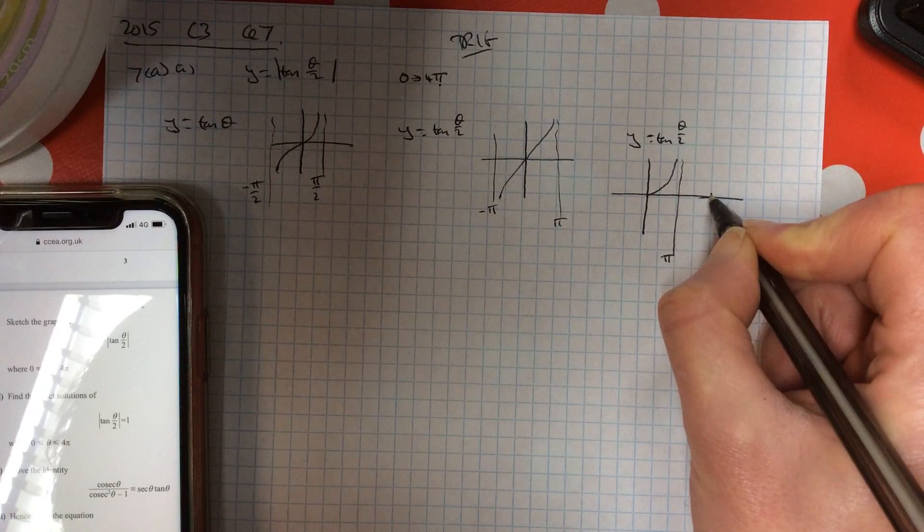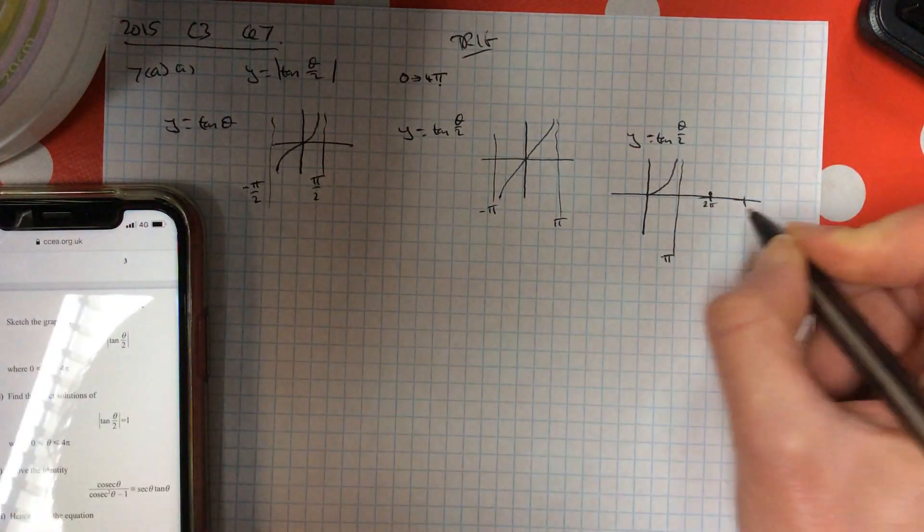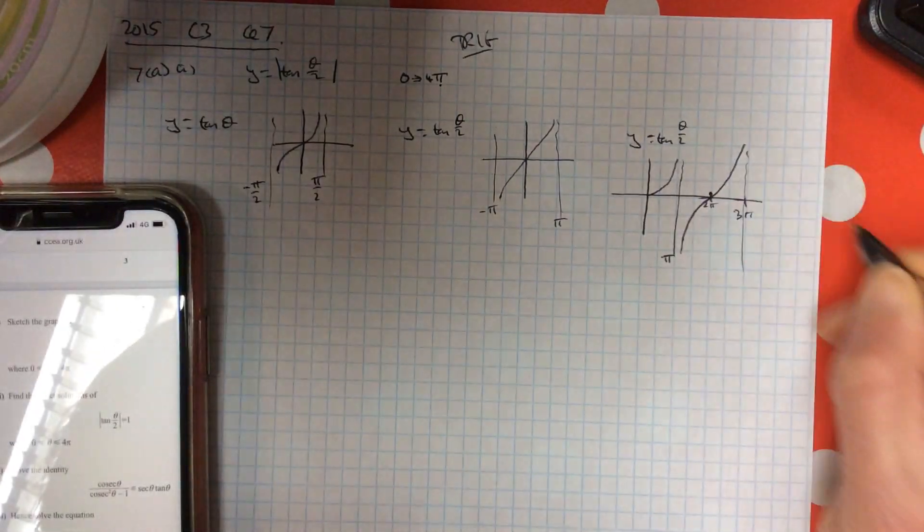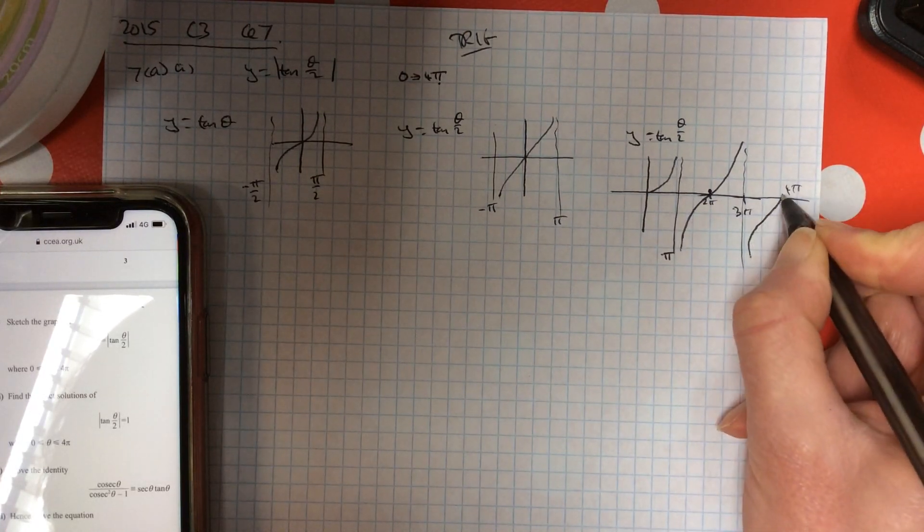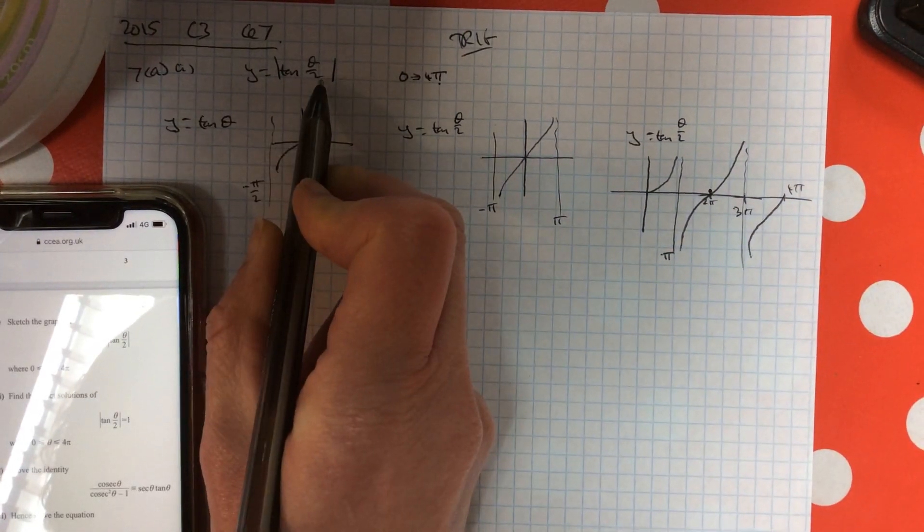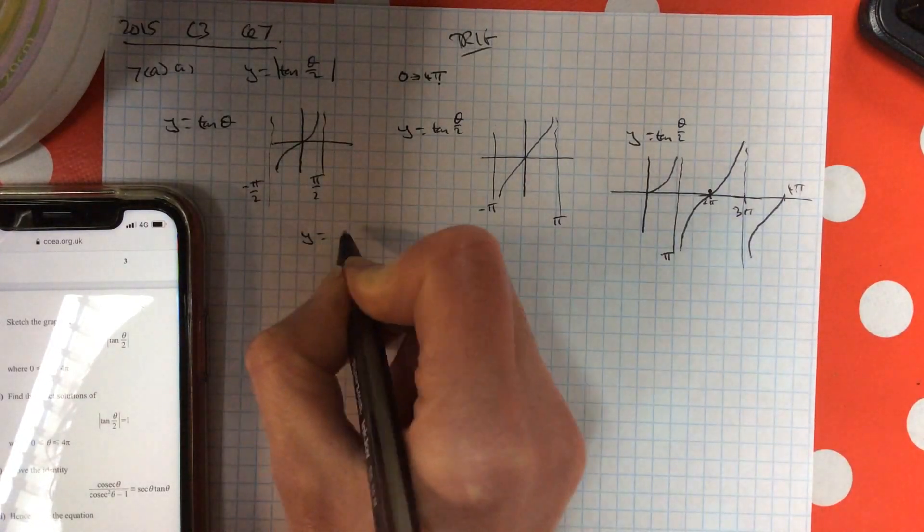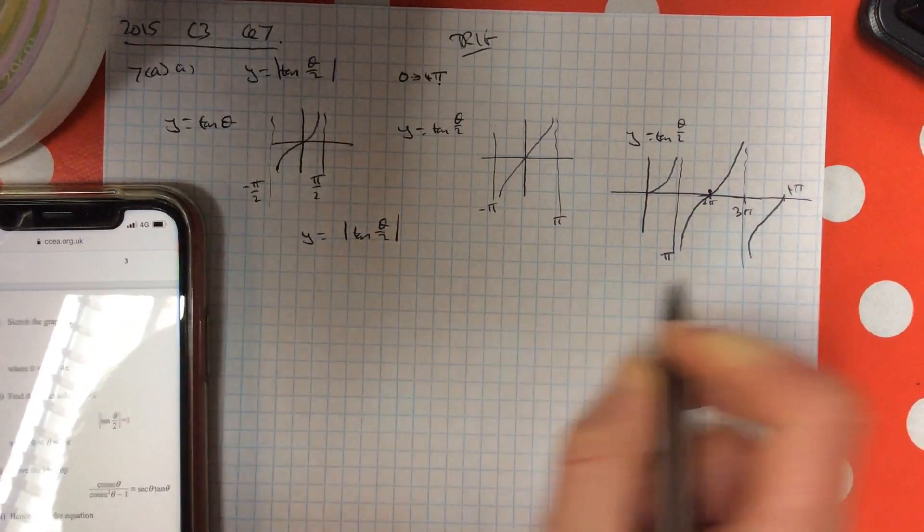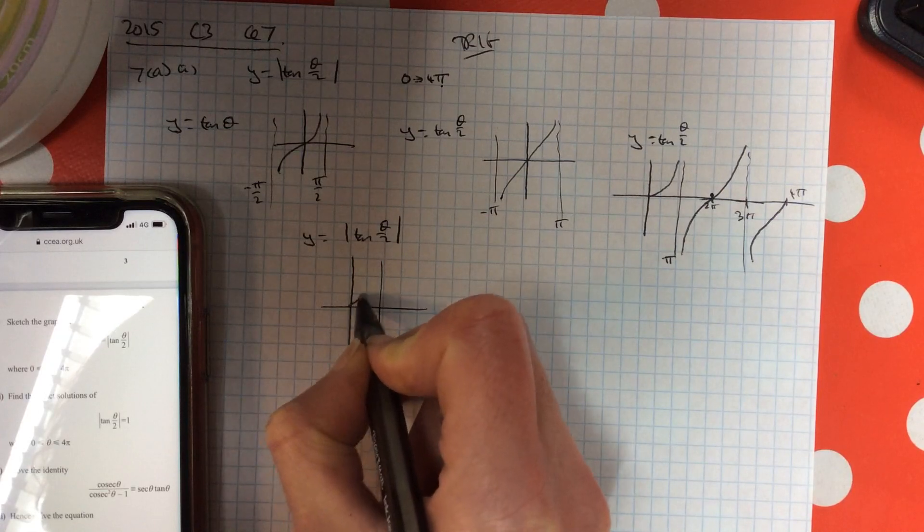The period is 2 pi, so that's going to be my 2 pi in there and then up to 3 pi. My next asymptote, drawing your curve, and I have to go up to 4 pi, which will be here. Now this graph wants a modulus, so anything that's in the bottom half is going to be reflected up. So y equals modulus of tan theta over 2.